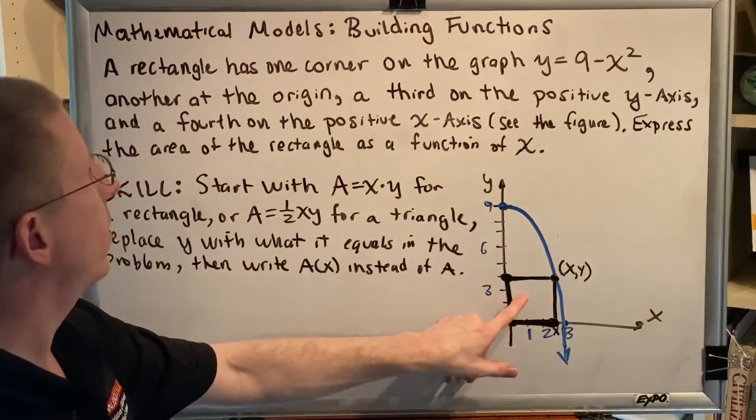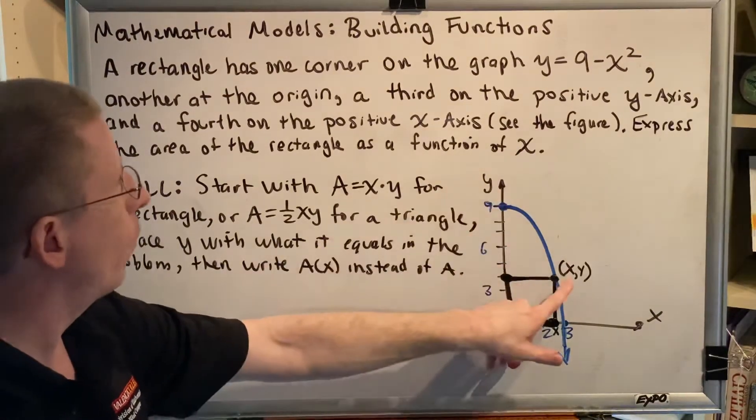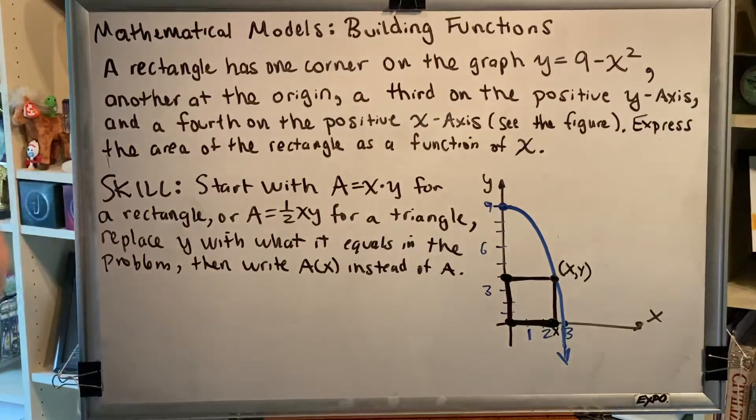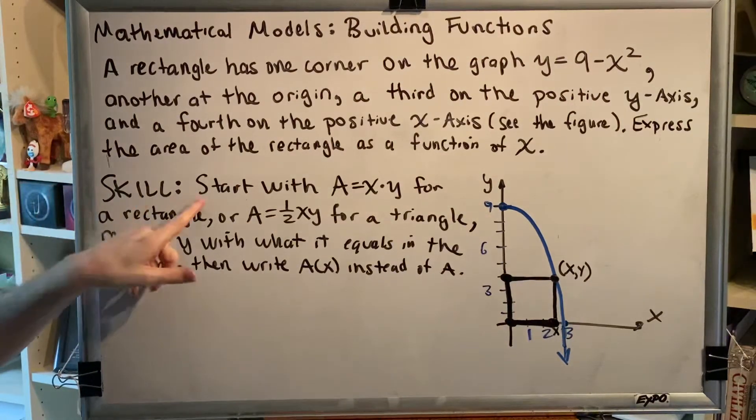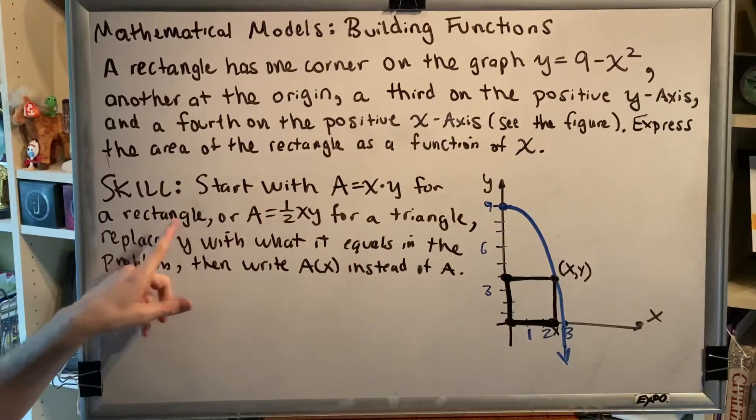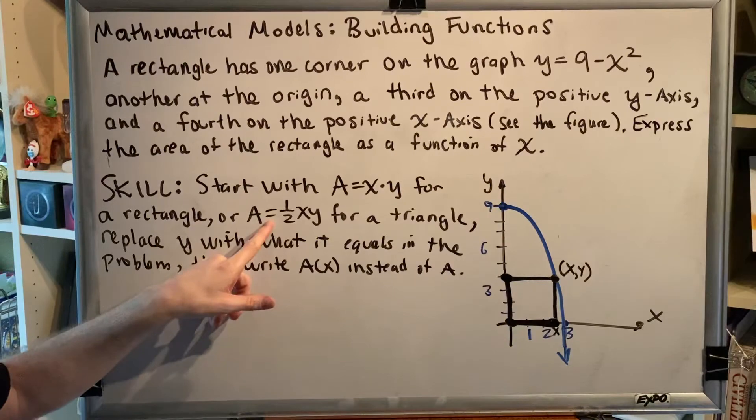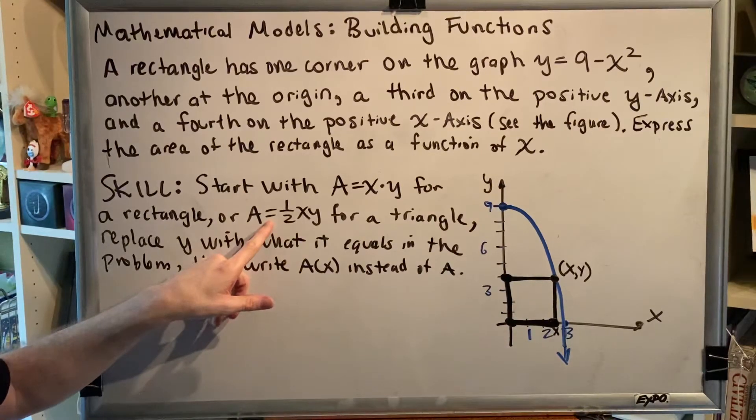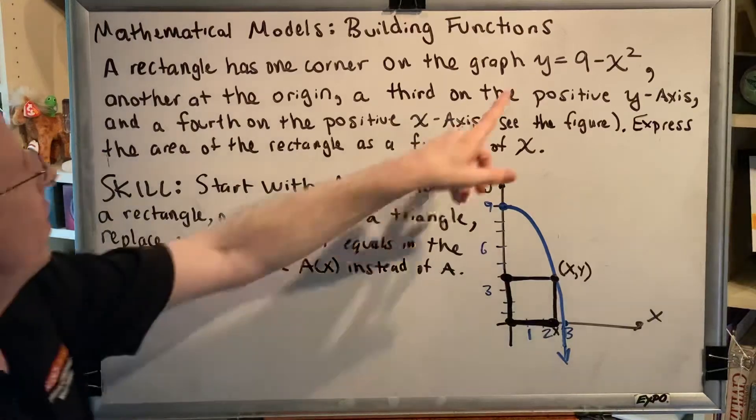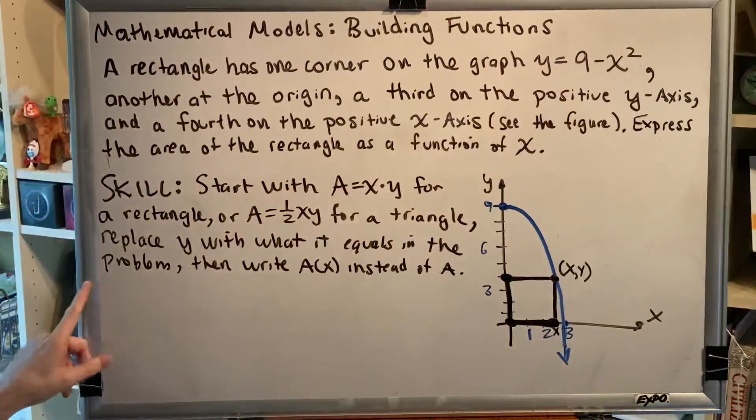Okay, here's the skill for this problem type. What you have to do is start with the equation A equals x times y for a rectangle, or A equals one-half times xy for a triangle. Then replace y with what it equals in the problem, and then write A(x) instead of A.